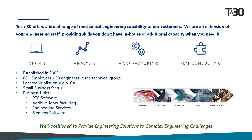Tech30 also has small business status and four business units: PTC software, 3D printing and additive manufacturing, engineering services, and Siemens software. We can provide a wide range of engineering services including mechanical and electrical design, static, dynamic, and kinematic analysis, design for manufacturability, assembly and 3D additive manufacturing, new PLM implementations, system integrations and migrations, and training for all the services above. Tech30 can provide services in areas where you currently do not have the expertise or supplement your existing in-house capabilities.